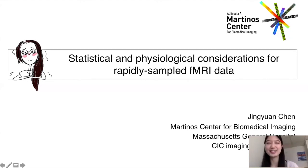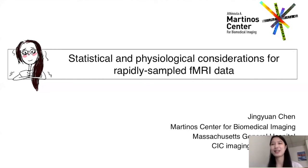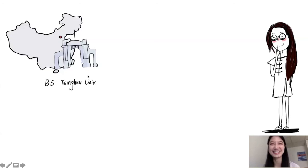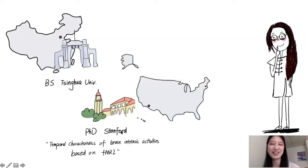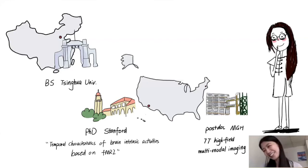Thanks for the introduction and for inviting me to give a talk. The topic I'm sharing today is on the statistical and physiological considerations for faster fMRI data. I received my undergrad in China in biomedical engineering, then received my PhD from Stanford University. My thesis work was supervised by Dr. Gary Glover and the title is 'Temporal characteristics of brain intrinsic activity based on 3T fMRI.'